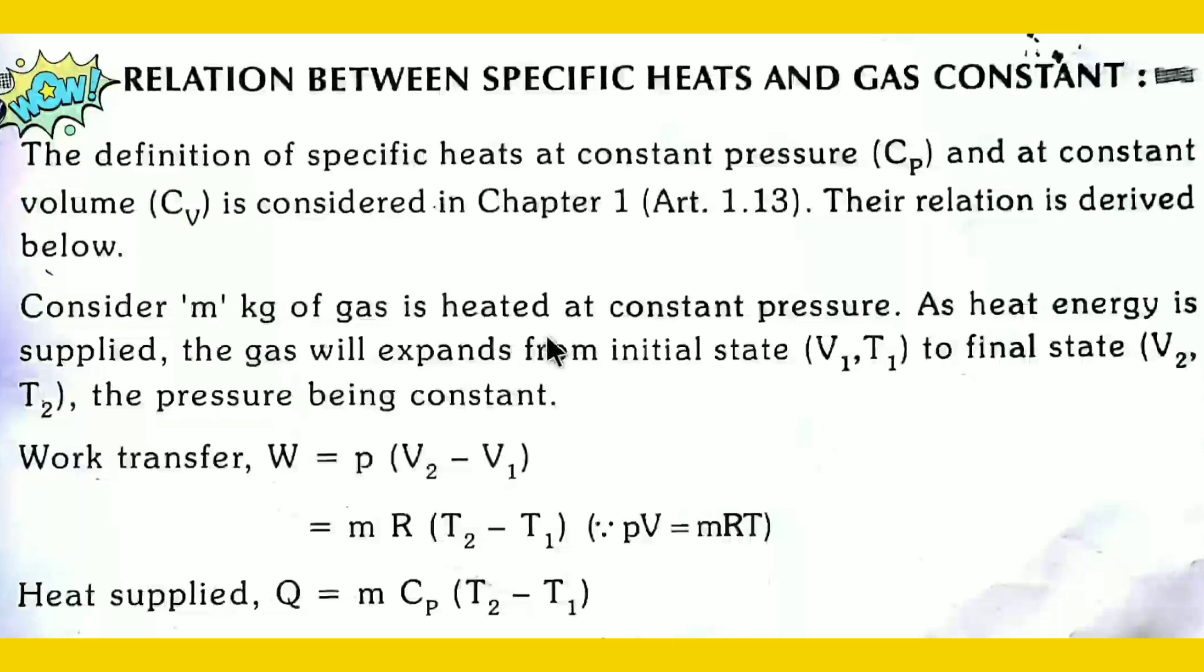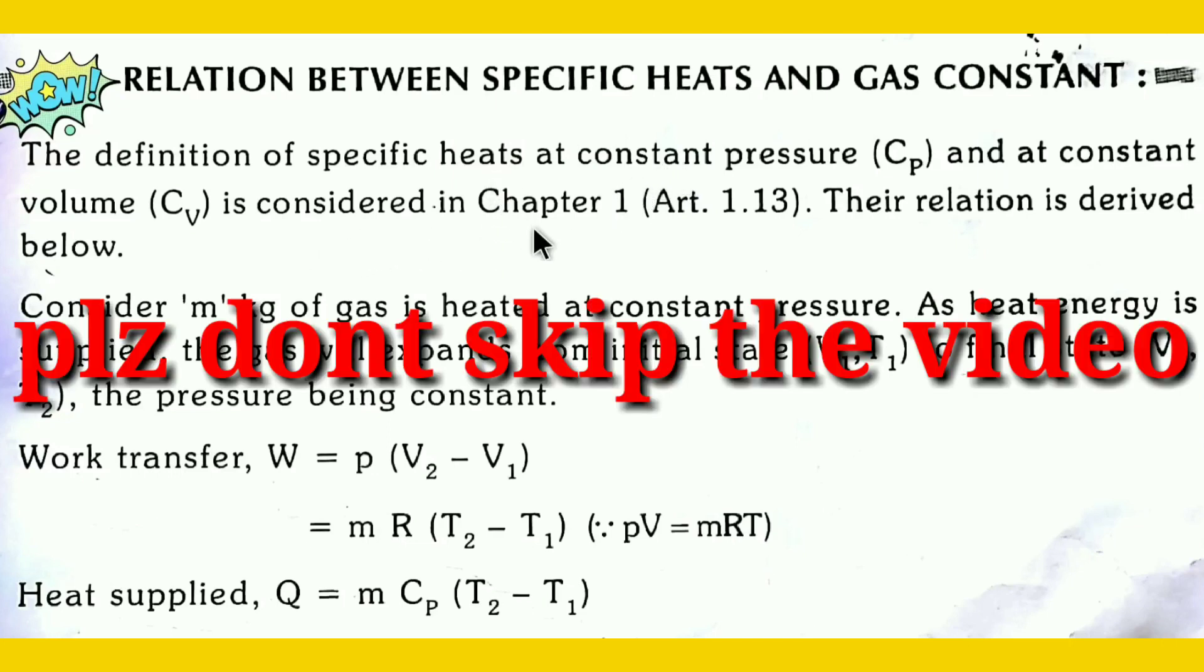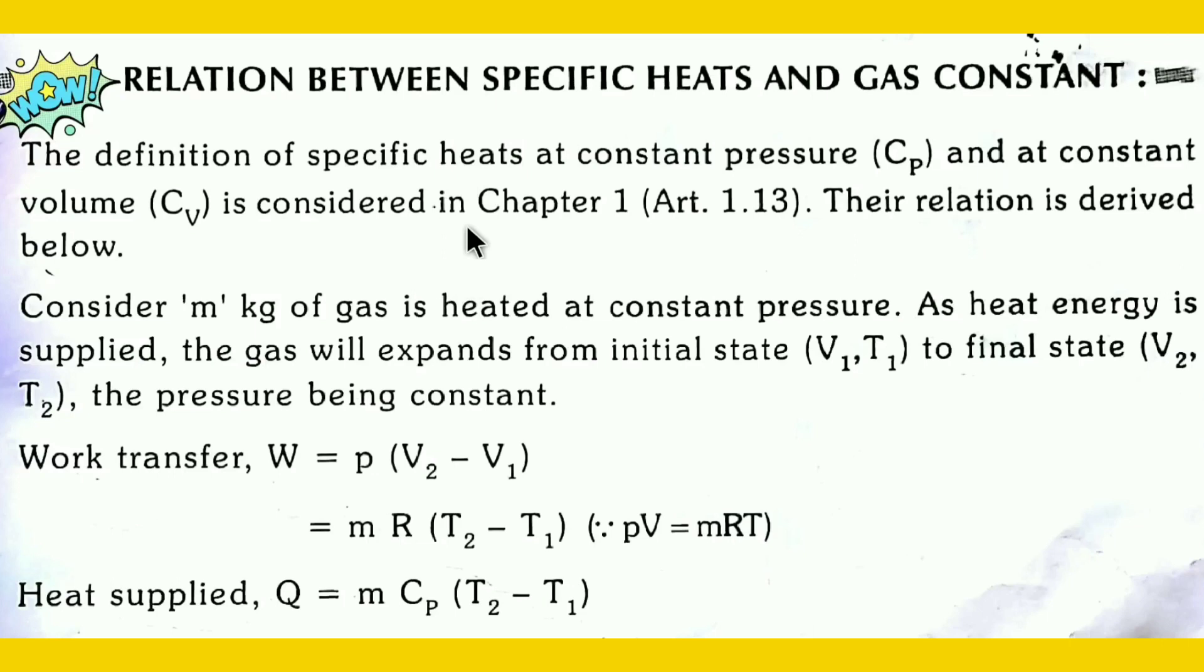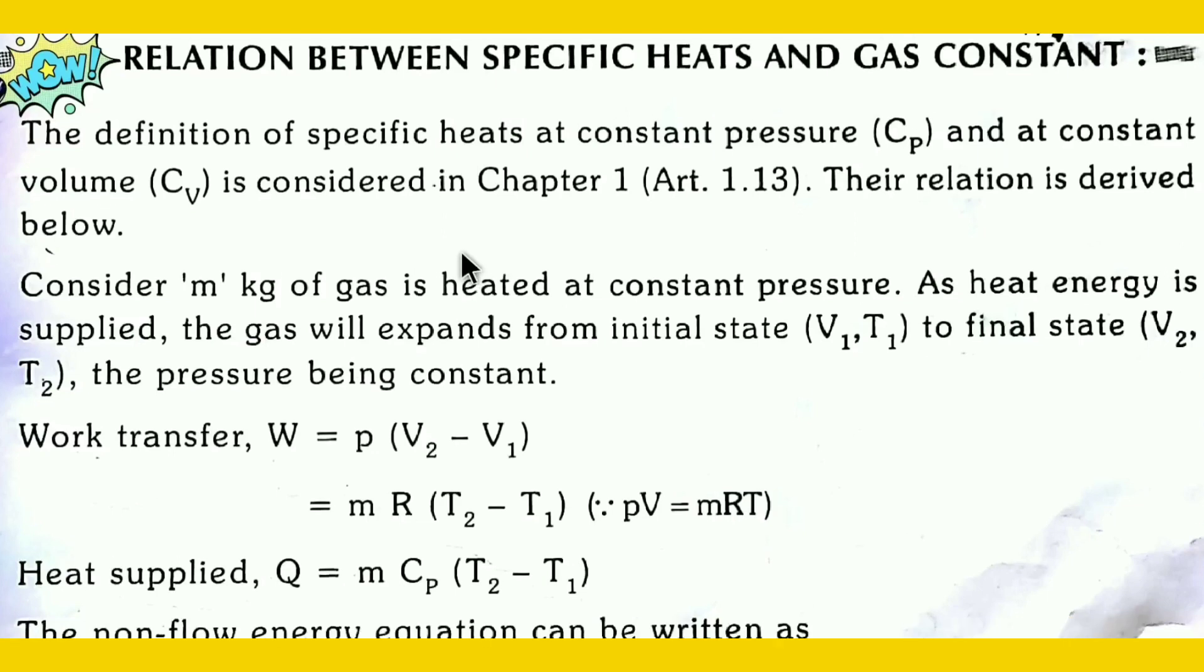We have a relation between the specific heat and the gas constant. That means, Mayer equation is the formula. The definition of specific heat at constant pressure Cp and constant volume Cv is considered and interpreted. The relation is derived below. Cp minus Cv is equals to R into expression in Mayer's equation.